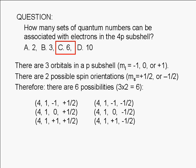Here are the six possibilities. Note that specifying the subshell is the same as specifying the principal quantum number N and the orbital quantum number L. For any electron in a 4P subshell, N is equal to 4 and L is equal to 1.